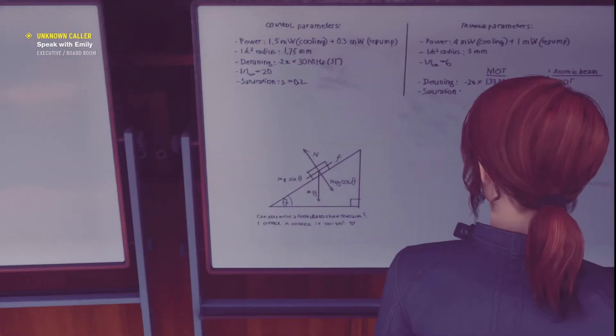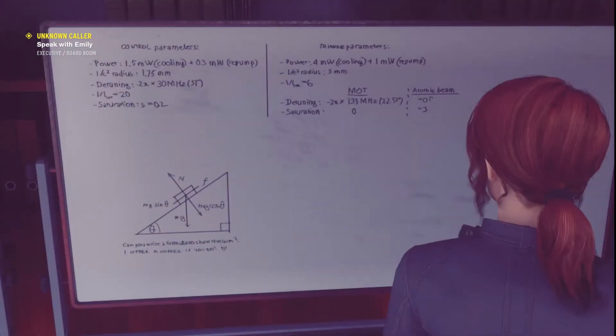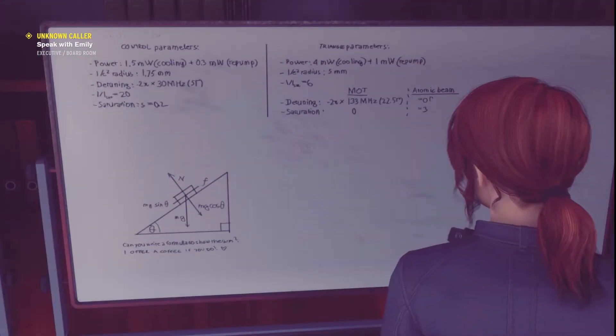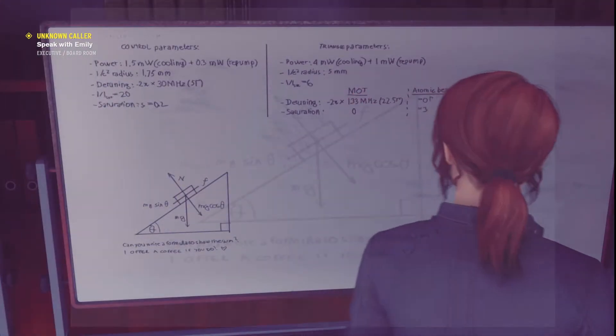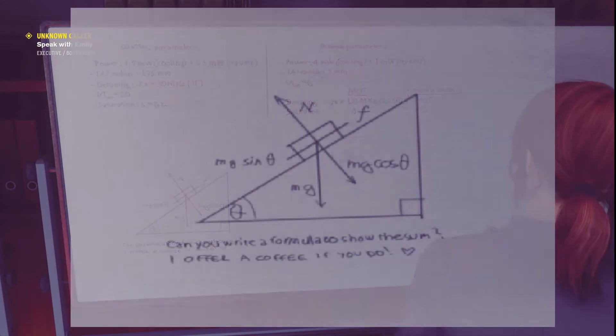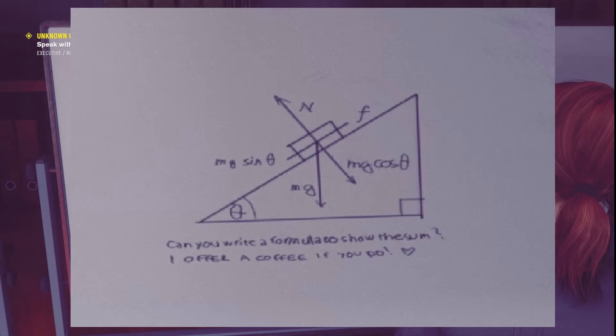When playing Control by Remedy Games, I ran into this chalkboard that had a triangle with all these arrows on it. You might wonder what it means — this triangle represents a ramp, and these arrows represent different forces. Forces make you change your state of motion.